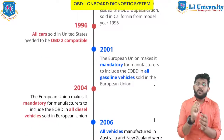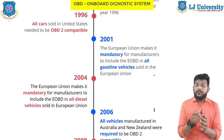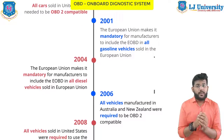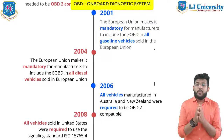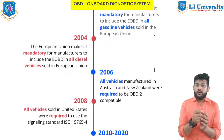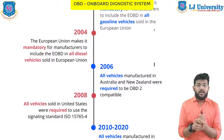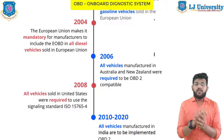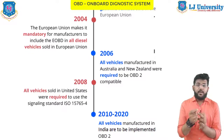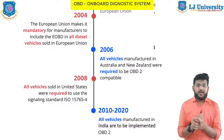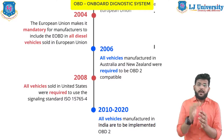In 1996, all cars sold in the global market were required to have OBD-2 compatibility. In 2001, European markets made it mandatory for manufacturers to include EOBD in all gasoline vehicles sold in European countries. In 2004, the European Union made it mandatory to include OBD-2 in all diesel vehicles sold in Europe. In 2006, vehicle manufacturers in Australia and New Zealand were required to use OBD-2 compatibility. In 2008, all vehicles sold in the United States were required to have OBD-2 per ISO standards. India implemented it in 2010.